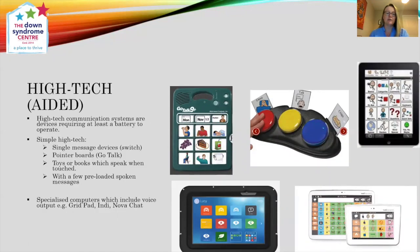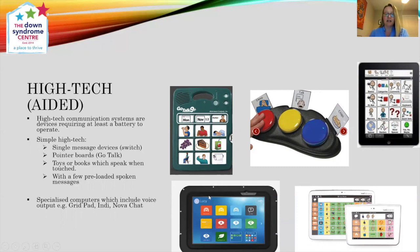High tech communication systems are devices requiring at least a battery to operate. They can be charged up as well. Simple high tech can be something as simple as a switch — a single message device. Another single message device is a GoTalk or a point-of-board. There are toys and books that speak when touched, and anything that can have pre-loaded spoken messages on them. Also on high tech, we have specialised computers which include voice output. An iPad with a communication app is one example; here is Proloco2Go software. Here is the GridPad with Grid3 software. And this is a picture of the Indy device, which uses SNAP and Core First.